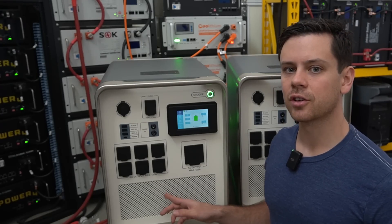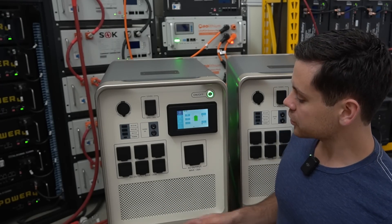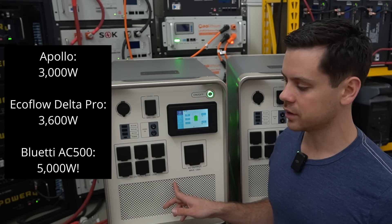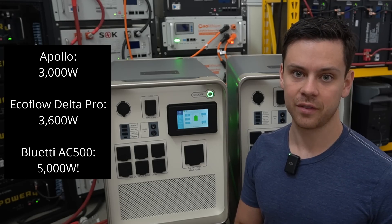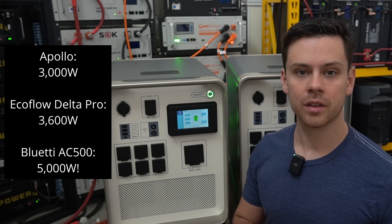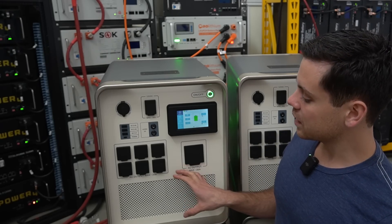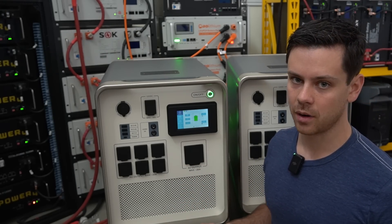Now let's talk about the AC inverter's output capabilities and configurations. So first off, it only has a 3,000 watt inverter single phase 120 volt. This is smaller than the Bluetti AC500 which is 5,000 watts and it's smaller than the EcoFlow Delta Pro that's 3,600 watts. But this can be configured in so many different ways to run any load you want, it's mind-boggling.